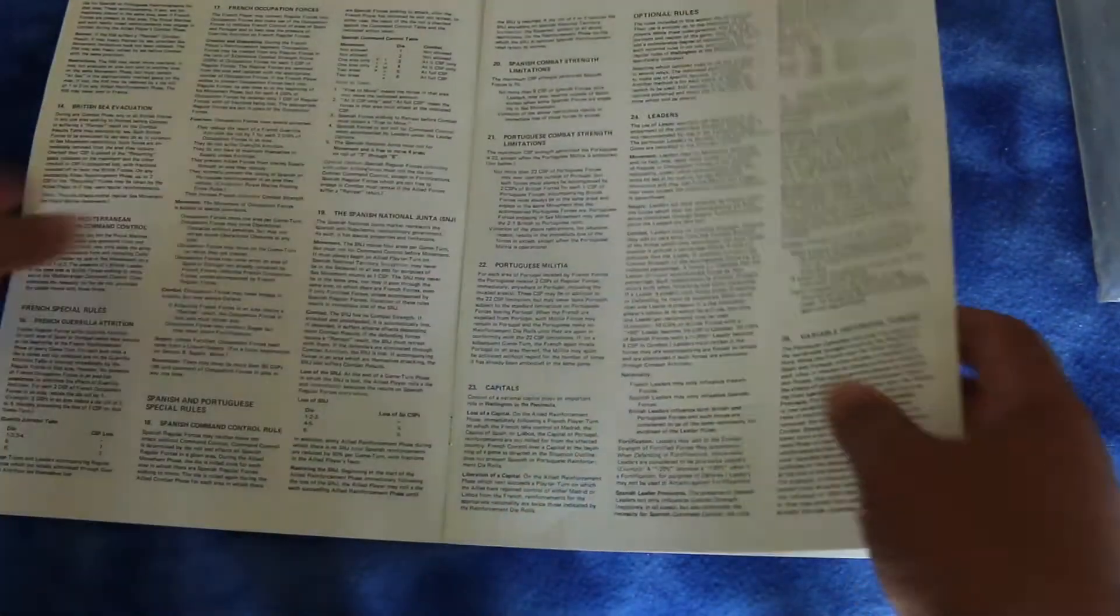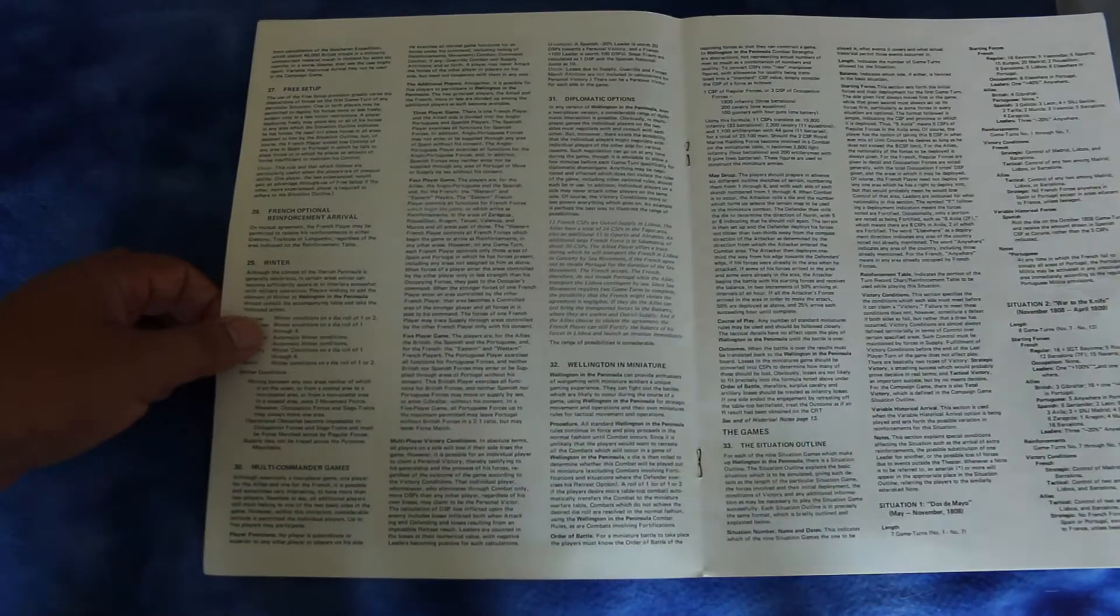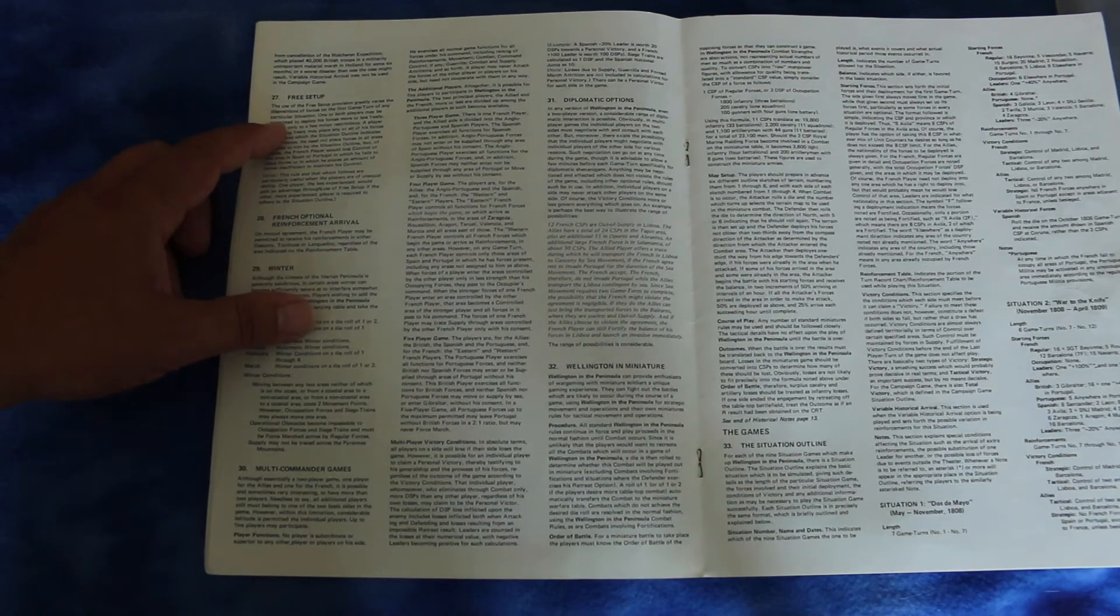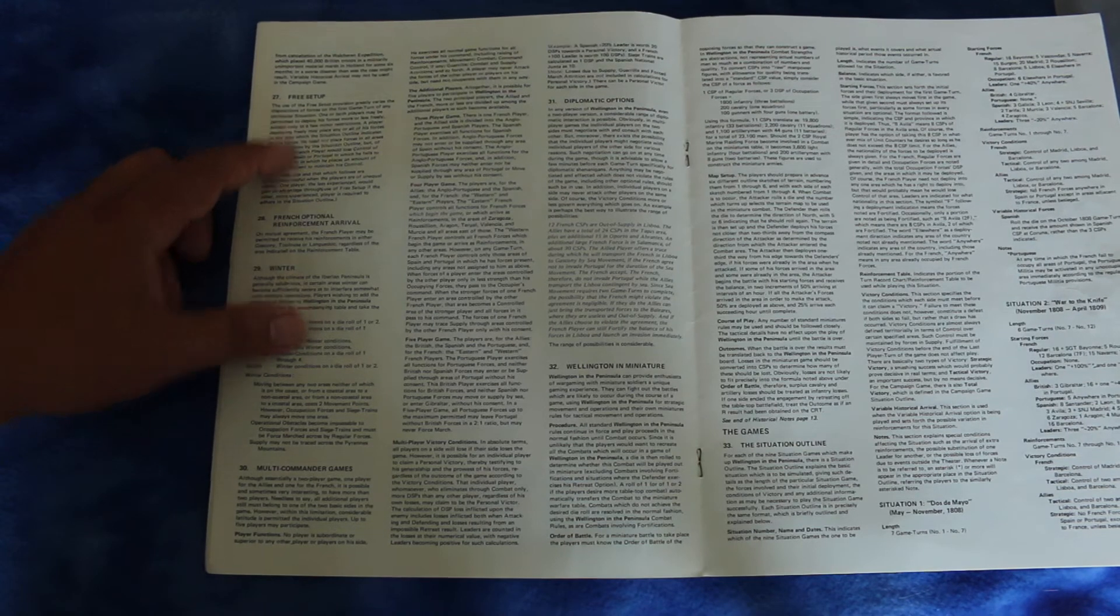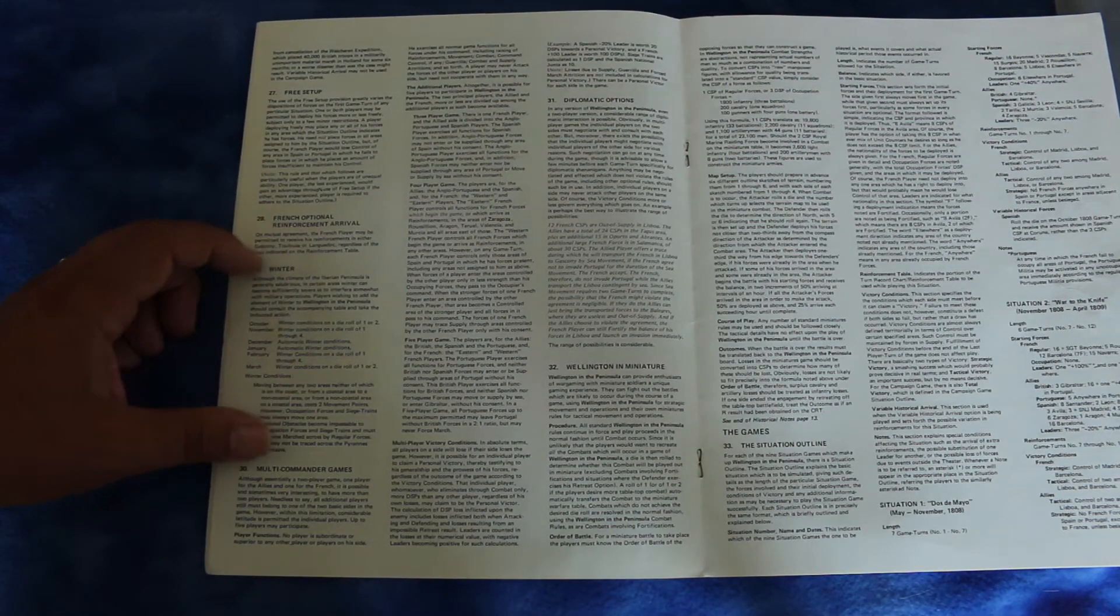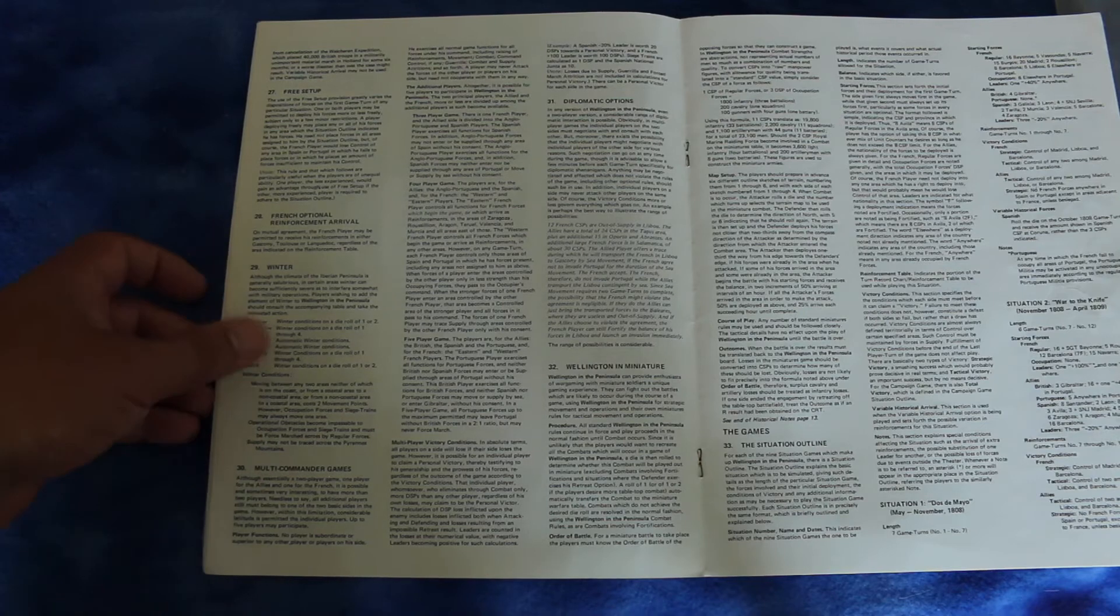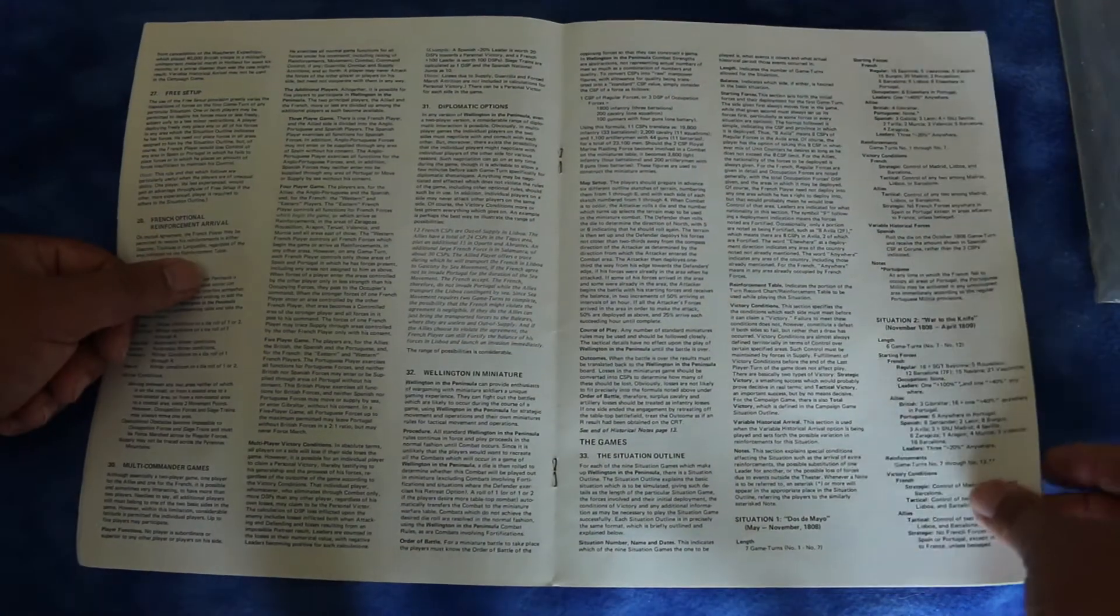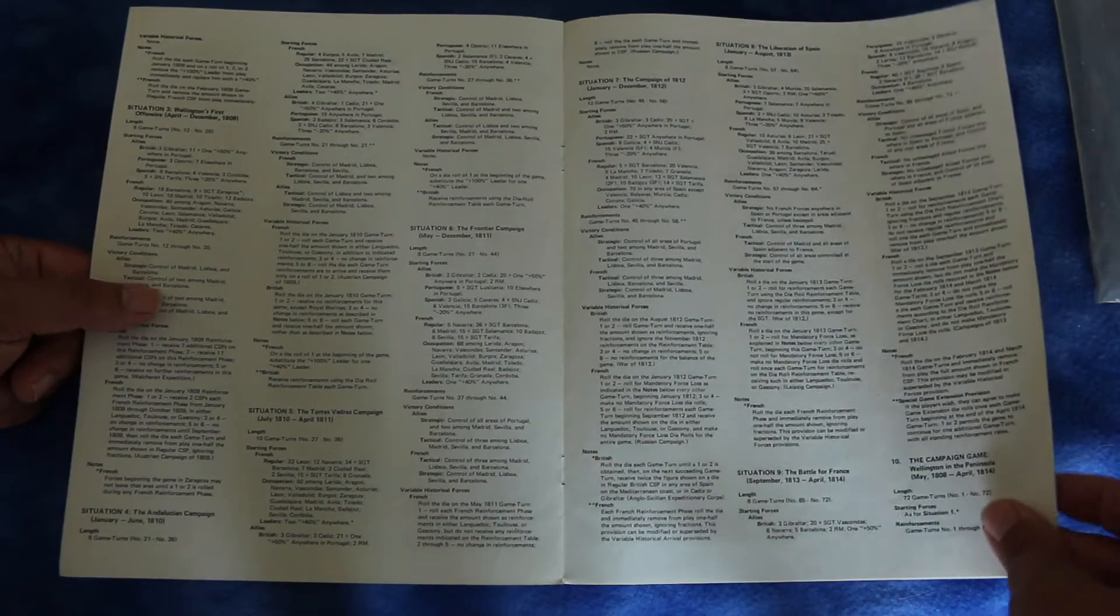There's optional rules such as leaders and hidden movement. So far this doesn't look like it's going to be that difficult to play, but let's read on. Maybe I'll eat my words, but we'll see. Alright, free setup, French optional reinforcements arrival and then it's got winner rules and multi commander games. Looks like that's it.